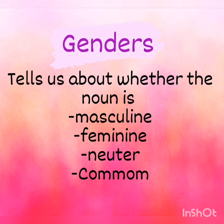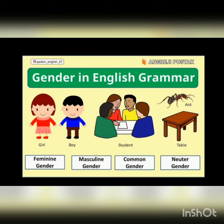Masculine genders are the nouns that refer to male — like boy, king, dog. These are masculine genders.